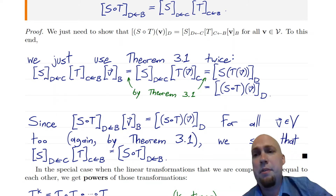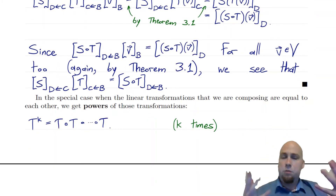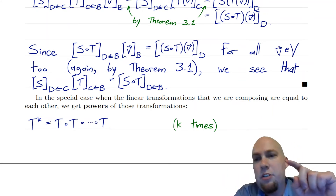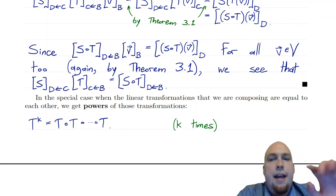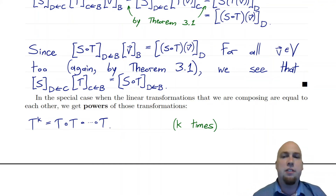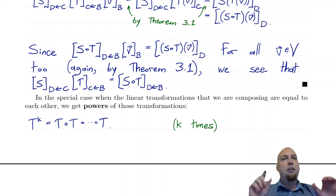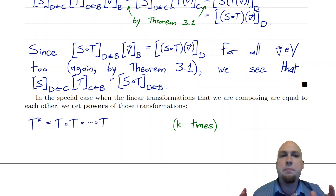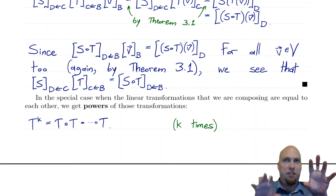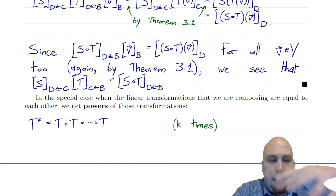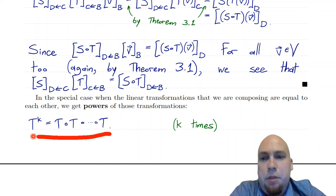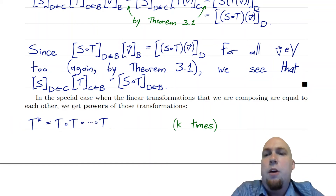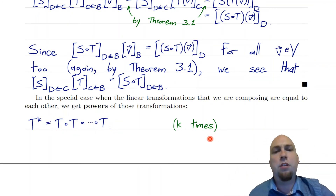Before we get to our main example, there's one special case that's really important to note: we can use all of this to define powers of linear transformations. If your linear transformations s and t are the same as each other, you can compose a linear transformation with itself, as long as its input and output spaces are the same — in other words, if the vector spaces V and W are the same.